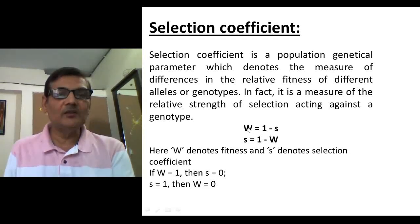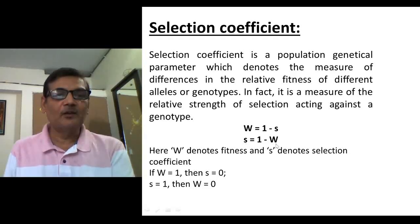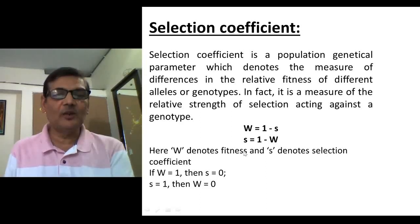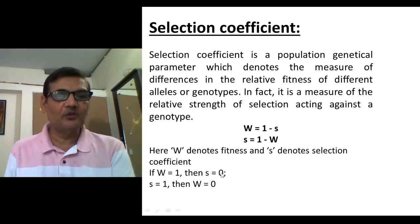If W is 1, then the selection coefficient S will be 0. And if S value is 1, that means there is a total deleterious or lethal effect of a particular genotype, which will lead to complete mortality of individuals carrying such genotype. So if S equals 1, showing complete deleterious effect, then W will be 0.